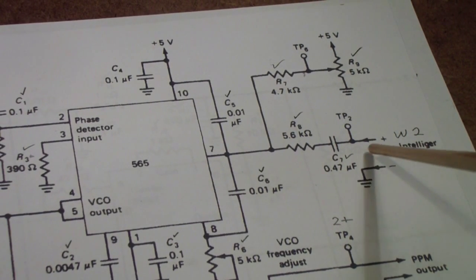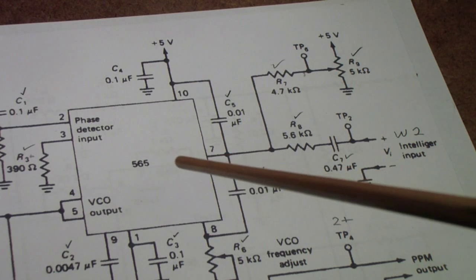In this particular case, we lock this to 20 kilohertz, a 20 kilohertz basic VCO frequency and carrier input. Then we input a 2 kilohertz sine wave as the intelligence signal. I'll show you what that does and how you can use that to produce both PPM and PWM.